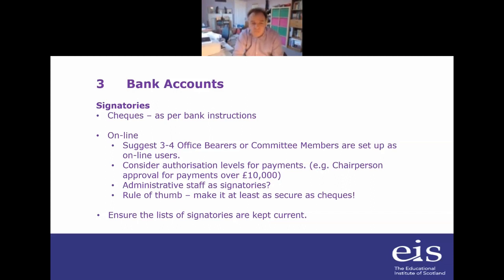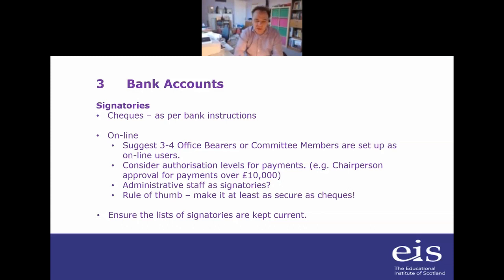Rule of thumb: try and make sure your online payment arrangements are at least as secure as your cheque payment arrangements. And very importantly, because office bearers and local associations do change on an annual basis, please make it somebody's responsibility to ensure that the lists of signatories are kept current. Because if you don't, you'll suddenly find you want to do something through your bank and the bank will say they need the approval of X, Y or Z — and then you find X, Y and Z are no longer on your executive.